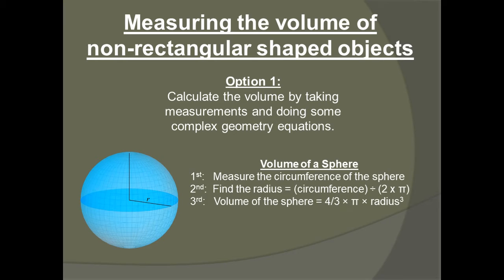Take, for example, calculating the volume of a sphere. First, you would have to measure the circumference of the sphere, and then you have to find the radius. To find the radius, you'll have to take the circumference and divide it by 2 times pi. From there, you can find the volume of the sphere, which is equal to 4 thirds times pi times your radius cubed.